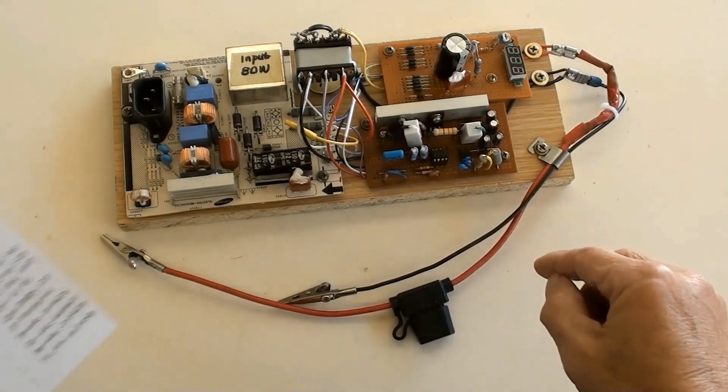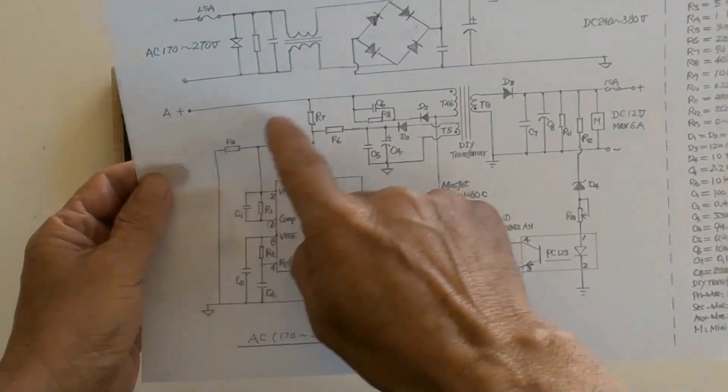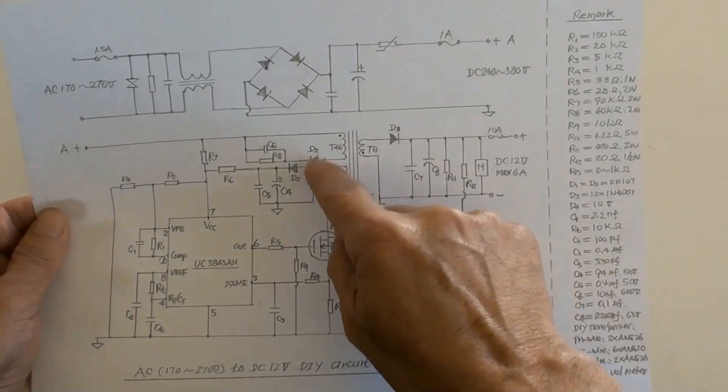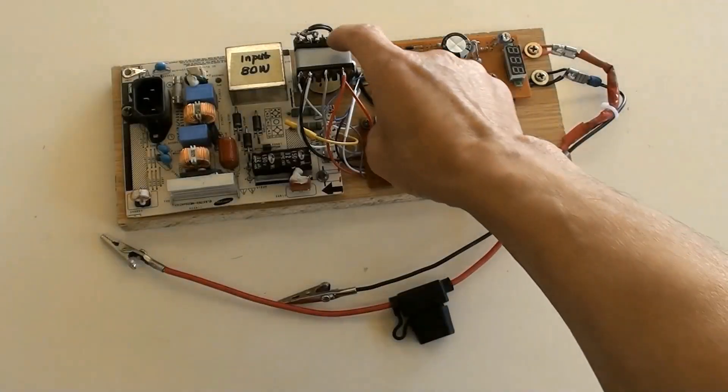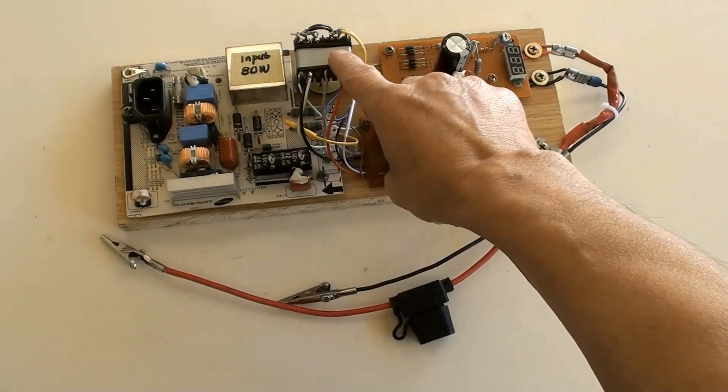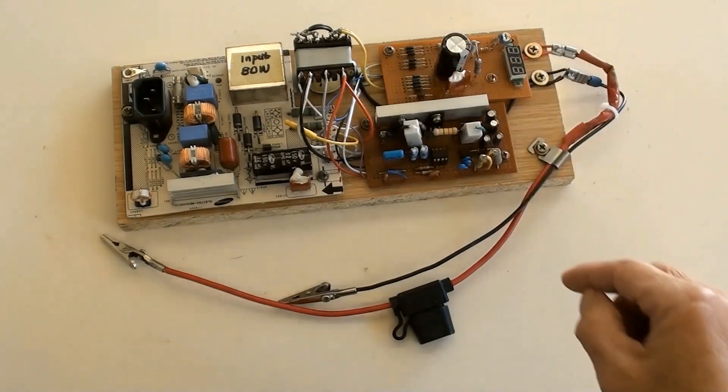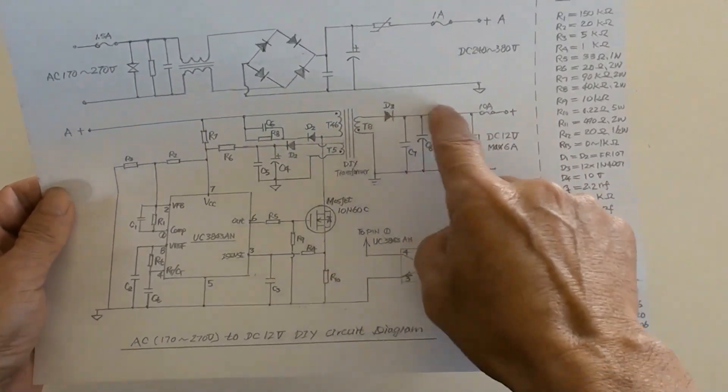This circuit board belongs to the part of circuit here in the diagram. The ferrite core transformer is here, which secured on the board. This is the DC 12 volt of the output circuit board, which is here in the diagram.